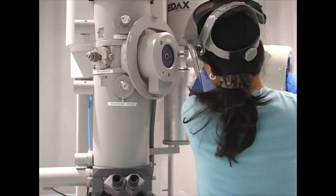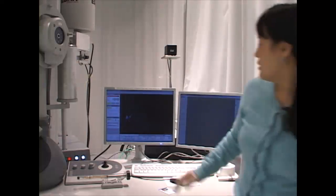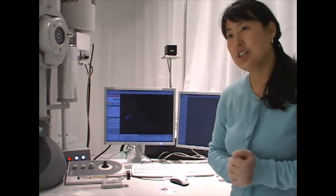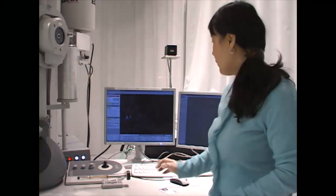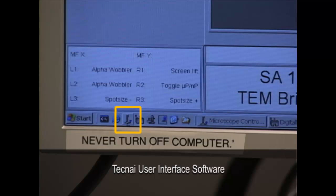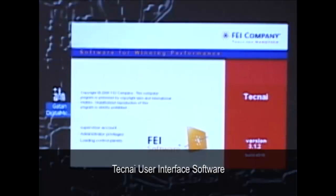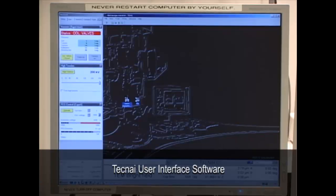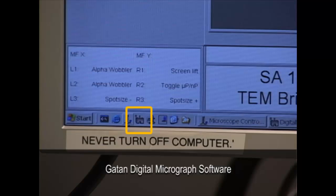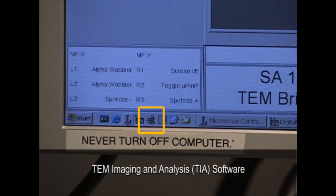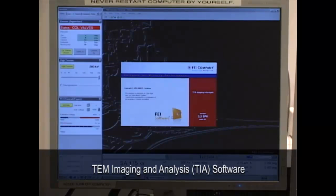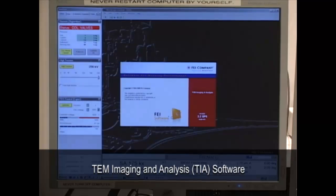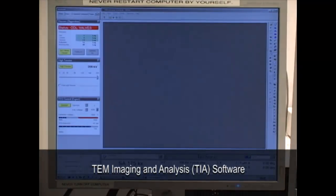The TEM uses four pieces of software, which should be opened in order. Open Tecnai User Interface Software, and you will hear a click-click, which confirms that the microscope is communicating with the computer. On the second monitor, we see the digital micrograph software. The third software is TIA, TEM Imaging and Analysis, which is used for recording scanning TEM and EDS.